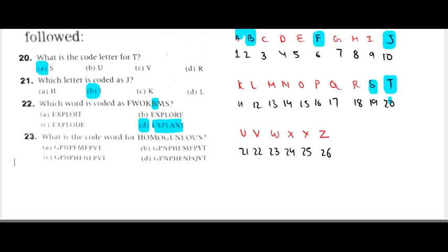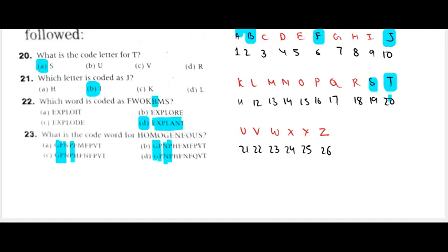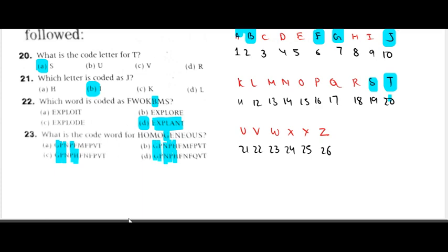Now the 'homogeneous' question. H is even — so one position back. All options have GPN. Now G is odd — for odd we go forward — so H. That gives us 3. Then E, N — N is even, so one position back: M. The answer is B.